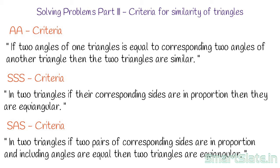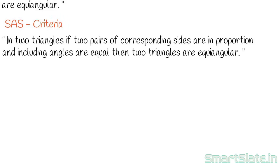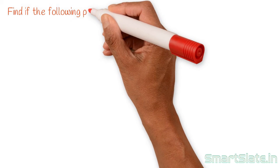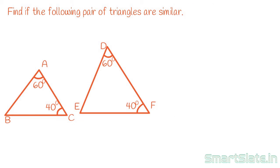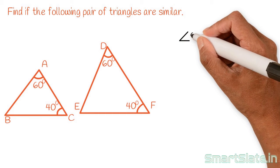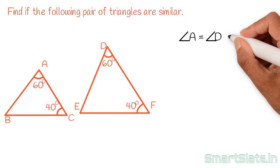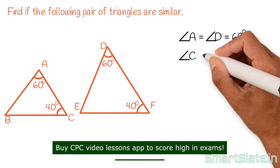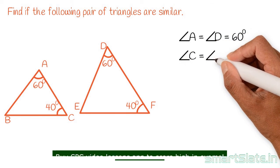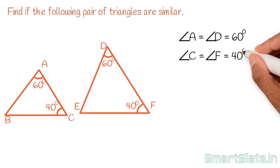Let's solve problems based on these criteria. Find if the following pair of triangles are similar. If you notice, two sets of corresponding angles are equal: Angle A is equal to Angle D — both are equal to 60 degrees — and Angle C and Angle F are both equal to 40 degrees.